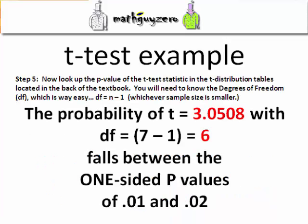In the back of your textbook, there should be a t-distribution table. Look up the value of t equals 3.0508. You're going to have to estimate with that. And the degrees of freedom is one less than the sample size. That's pretty easy. So you're going to find the column and the row where the two intersect. Where that does, you get a one-sided p-value between .01 and .02.